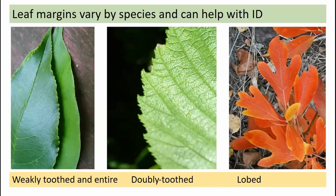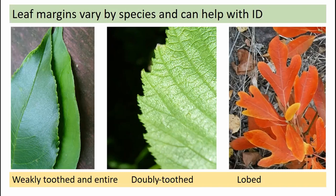Leaf margins are often a key definitive element in identification keys. Does the margin have teeth, or is it smooth and entire? Is it doubly toothed, or does it have larger projections called lobes? A cherry leaf has very small weak teeth; a dogwood leaf is entire with no teeth; an elm leaf is doubly toothed or doubly serrated with small teeth on top of large teeth; sassafras and mulberry or oaks have lobed leaves with significantly larger projections.